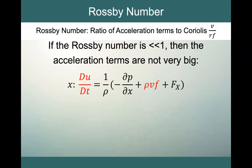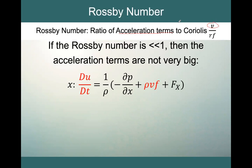If the Rossby number is much less than one, then the acceleration terms in the numerator are much less than the Coriolis terms in the denominator. In that case the acceleration terms are not very big and we can ignore and eliminate those from our equation of motion, making it a much simpler equation.